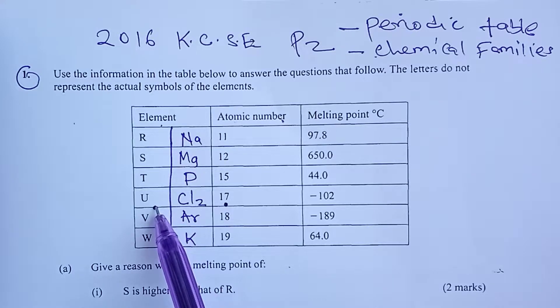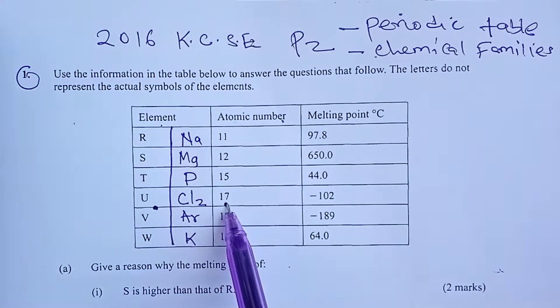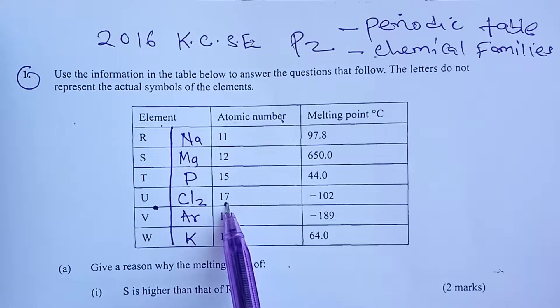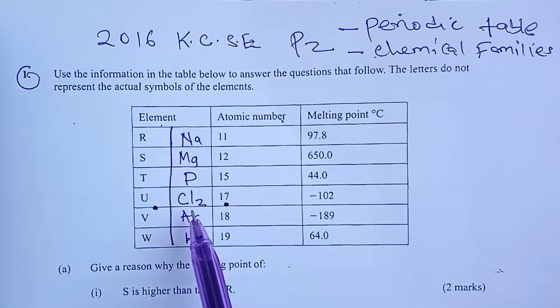I want to refer you to element U, which is atomic number 17. We know it is chlorine, and please check the way chlorine is symbolized. It is Cl2, which means it exists as diatomic molecules.